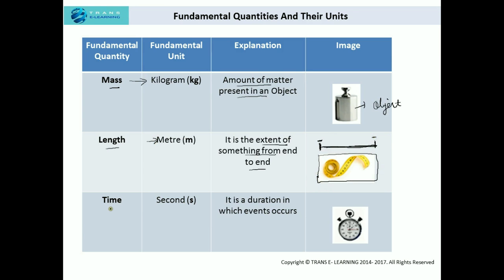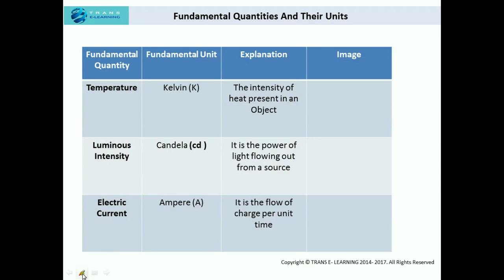Now, time — it is the duration in which an event occurs. The fundamental unit for time is second, and a stopwatch can be used to measure the time duration in which an event occurs. Apart from mass, length, and time, the other four fundamental quantities that were introduced are temperature, luminous intensity, electric current, and amount of substance.